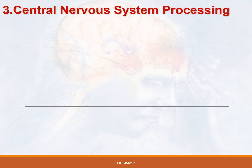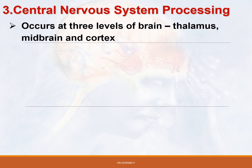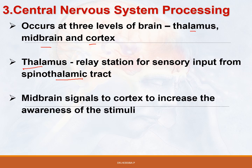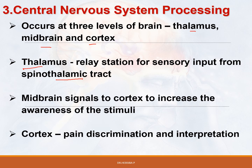The third aspect is central nervous system processing, which occurs at three levels of the brain: thalamus, midbrain and cortex. The thalamus acts as a relay station for sensory input from the spinothalamic tract. The midbrain sends signals to the cortex to increase awareness of the stimuli. The cortex discriminates and interprets the pain stimuli.